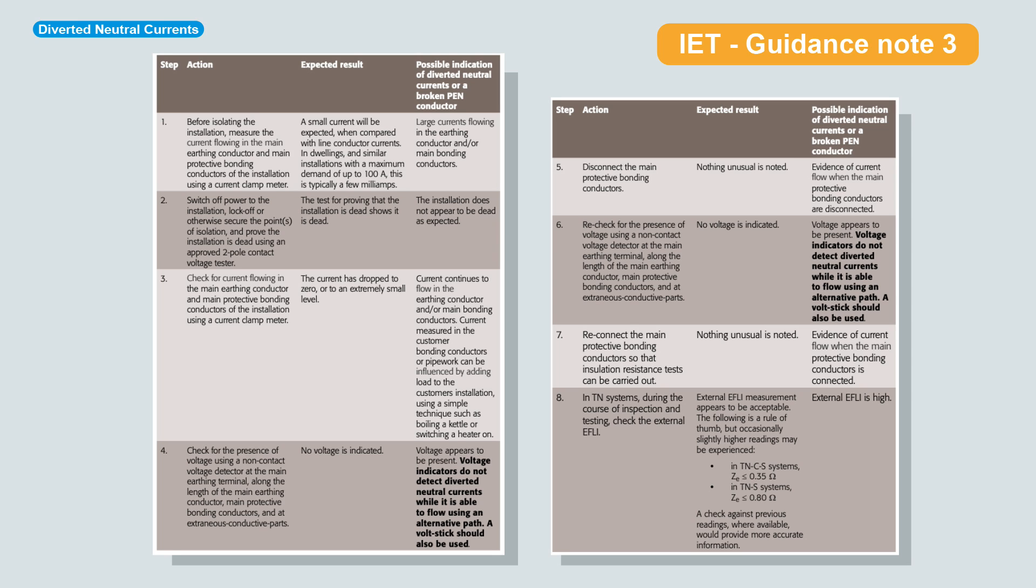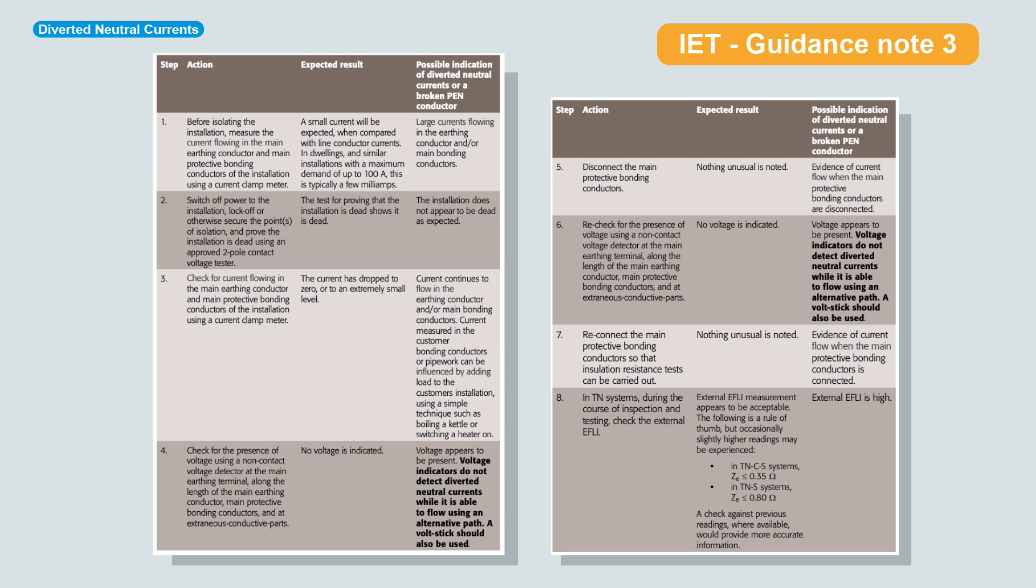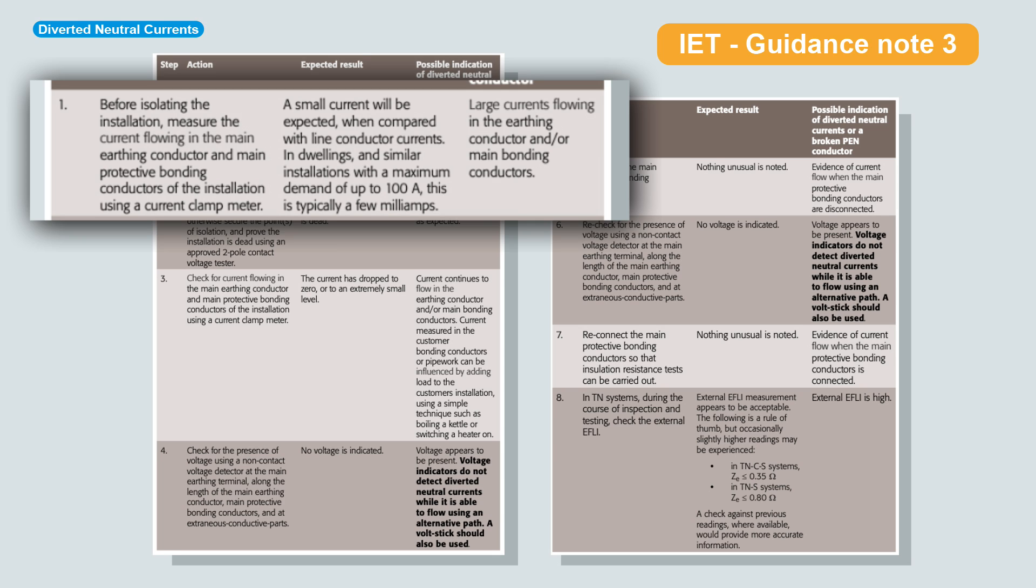We're starting to get some guidance through if we suspect we've got a diverted neutral current. This is the IET's Guidance Note 3. It describes the action that you might be doing. It tells you what the expected results should be from the action, and any possible indication that you might have a diverted neutral current or a broken PEN conductor. Number 2 here. Switch off power to the installation. Lock off or otherwise secure the points of isolation. And prove the installation is dead using an approved two pole contact voltage tester. The expected result is the test for proving that the installation is dead shows it is dead. A possible indication is the installation does not appear to be dead as expected. But before I isolate the installation, measure the current flowing in the main earthing conductor, and main protective bonding conductors of the installation using a current clamp meter.